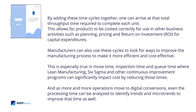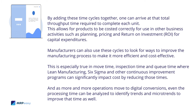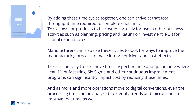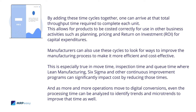By adding these time cycles together, one can arrive at the total throughput time required to complete each unit. This allows for products to be costed correctly for use in other business activities, such as planning, pricing, and return on investment (ROI) for capital expenditures. Manufacturers can also use these cycles to look for ways to improve the manufacturing process, especially in move time, inspection time, and cue time, where lean manufacturing, Six Sigma, and other continuous improvement programs can significantly impact cost by reducing those times.